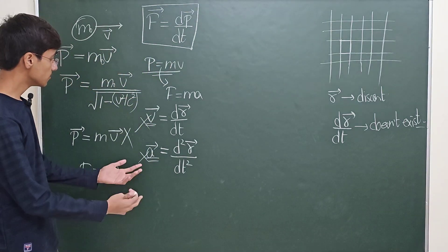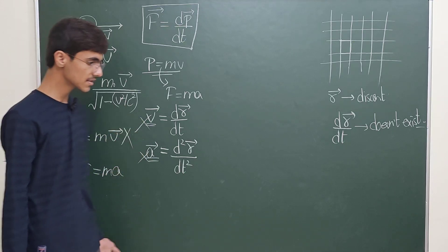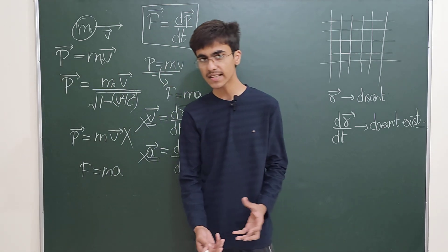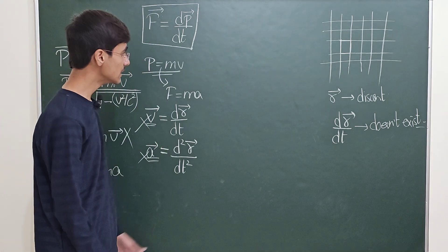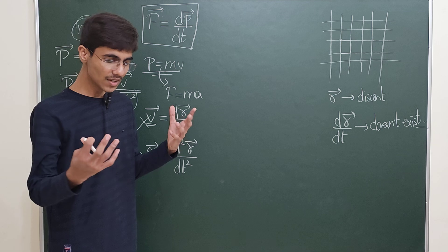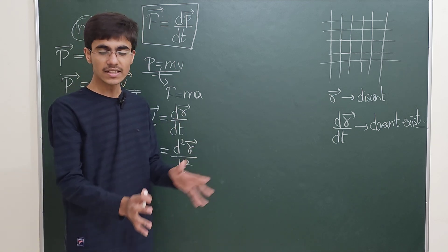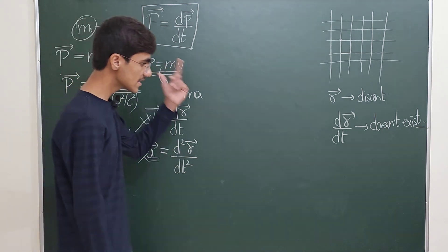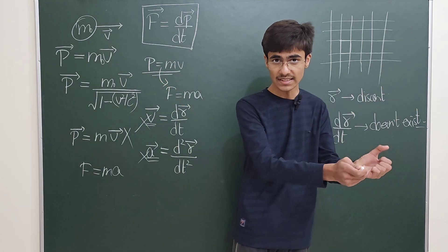Since the time derivative of position does not exist, there is no term like velocity or acceleration in quantum mechanics. So if velocity doesn't exist and acceleration doesn't exist, how do we define momentum? The neat answer is: you don't define momentum in terms of velocity or any such thing.